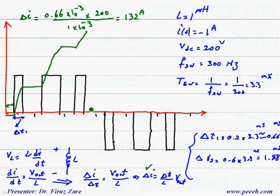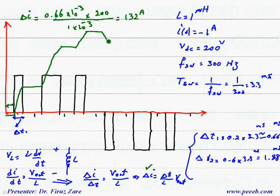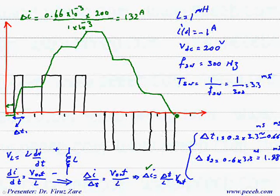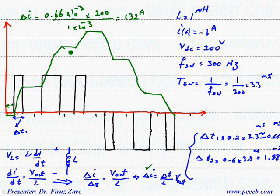Because the output voltage is negative in the second half, delta I is negative, meaning we decrease the current by 132 amps. Where the voltage is zero, the current stays constant, and then we decrease the current again. We can see that the current is constant when the output voltage is zero. However, in some applications with resistive load, the current increases and decreases based on the RL time constant.